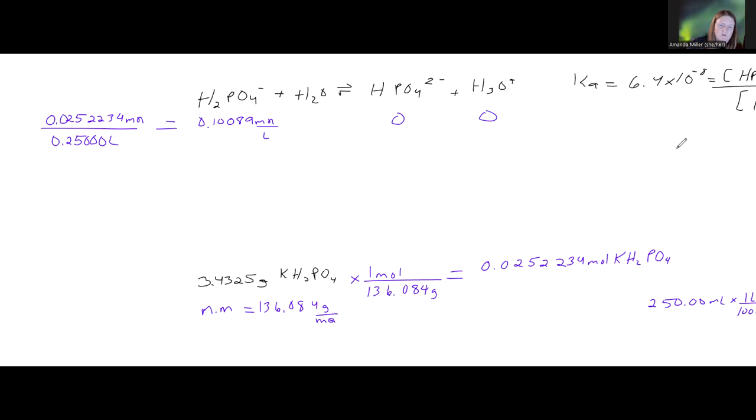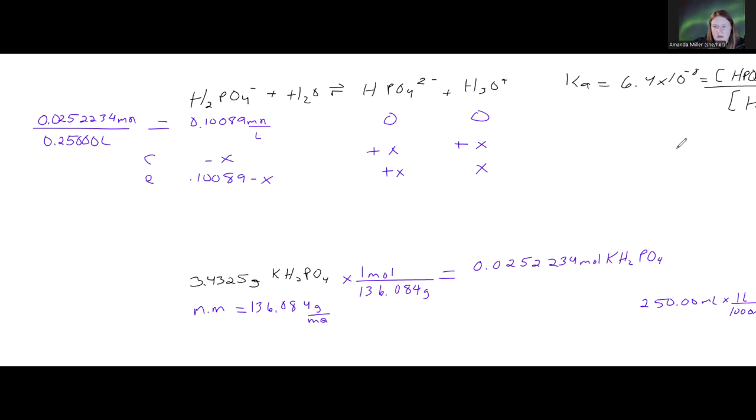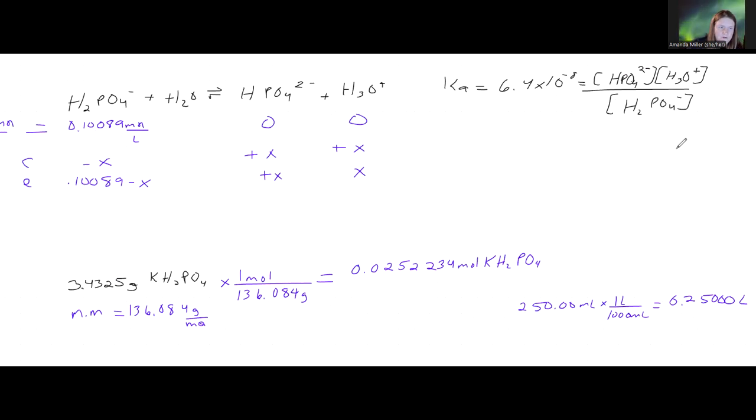So, that means the change is going to be minus the reactant plus the product. We don't have any coefficients, so it's just X. And so, at equilibrium, we have our initial minus the change there and also plus X because 0 plus anything is itself. So now I can plug it into the value we have here for Ka. So, Ka, we defined it as 6.7 times 10 to the negative 8. We defined it as HPO₄²- on the top, so that's X, times H₃O+, which is the other X, divided by H₂PO₄, which we said was 0.10089 minus X.